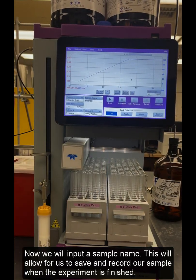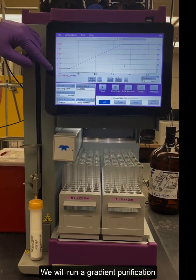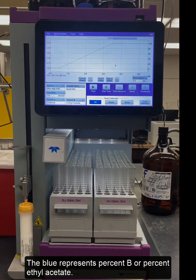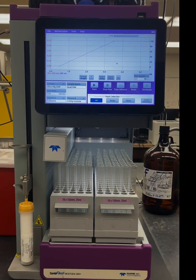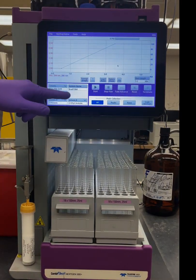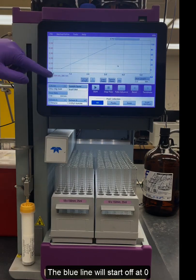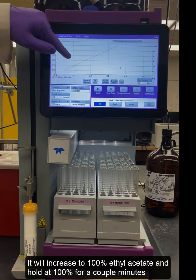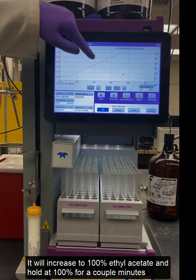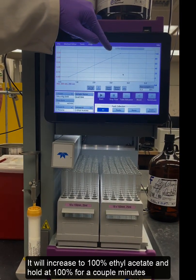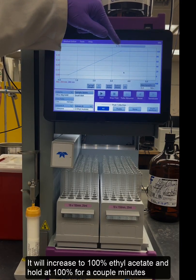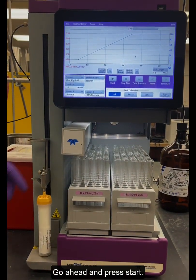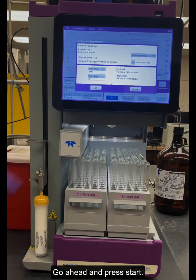On a gradient purification, the blue is percent B or percent ethyl acetate. The blue line will start off at zero and will increase to 100% ethyl acetate and hold at 100% for a couple of minutes, which should theoretically give us a good separation. Go ahead and press start.